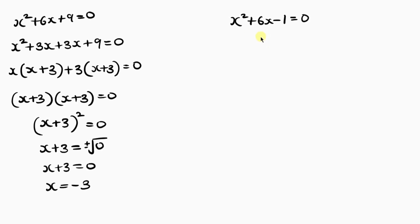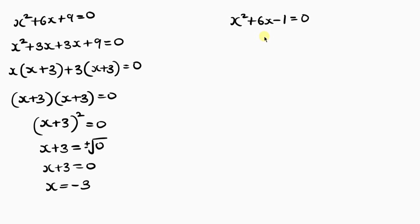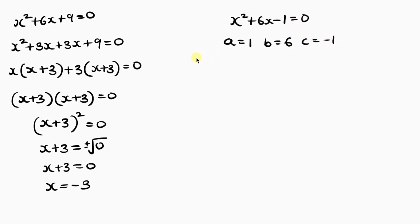There is no simple factorization here, so we'll use the general quadratic formula. Identifying the coefficients: a = 1 (coefficient of s²), b = 6, and c = −1. The formula is: s = (−b ± √(b²−4ac)) / 2a.